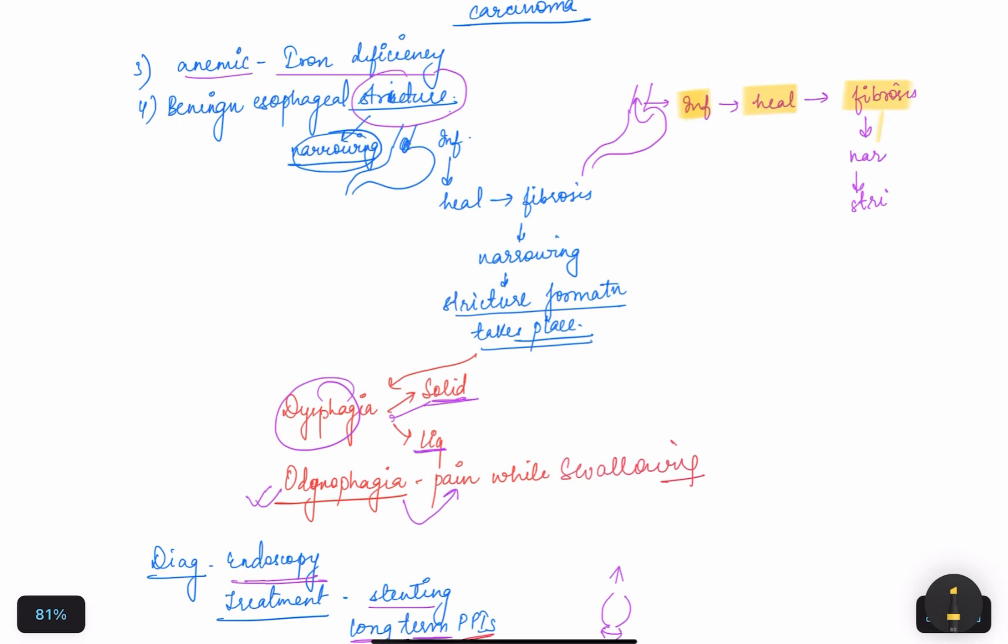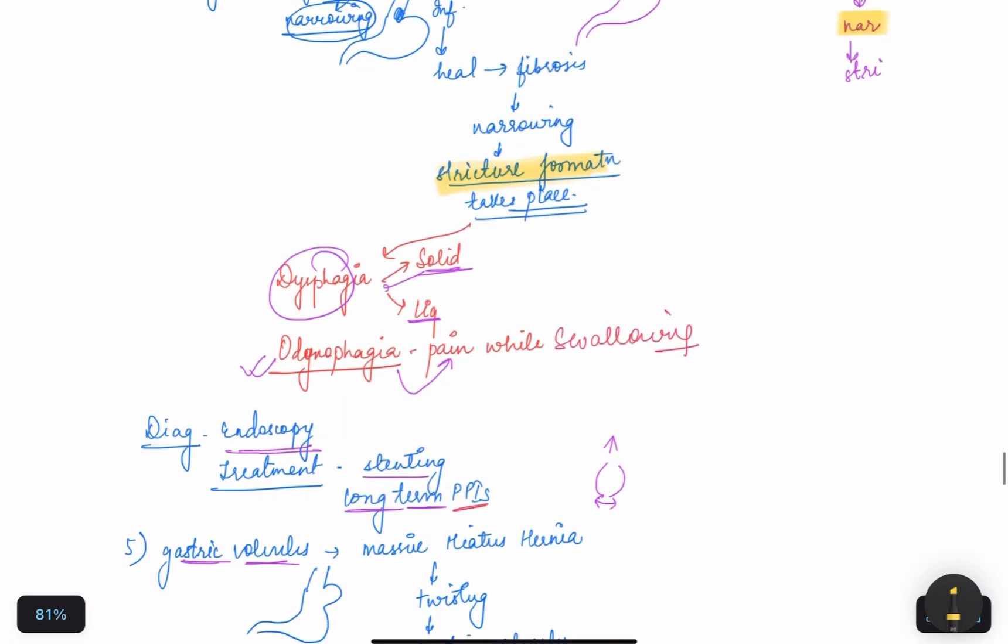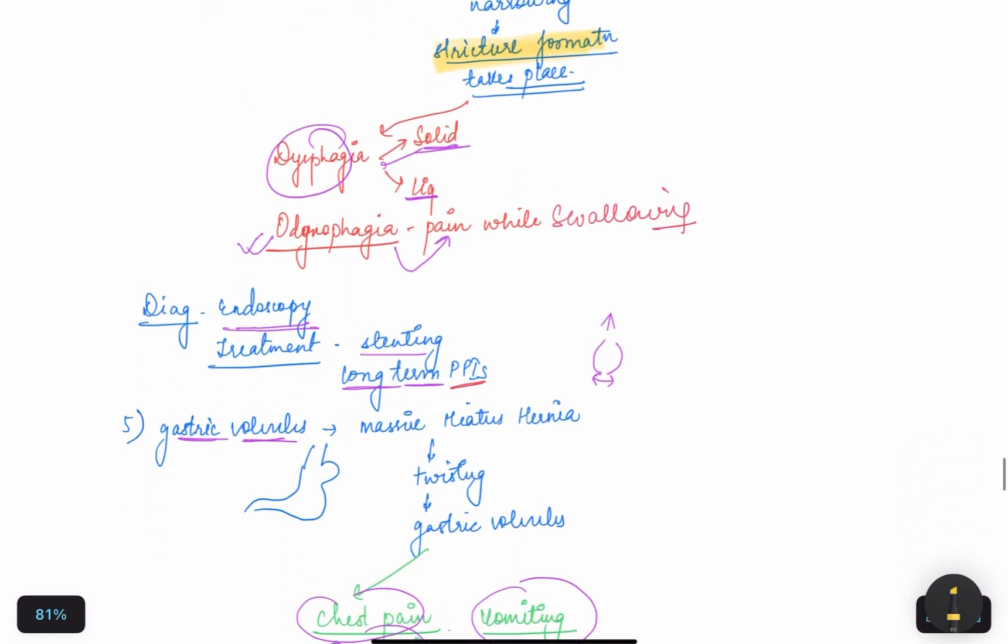Later on, fibrosis occurs and it will lead to the narrowing of the esophagus and stricture formation takes place. So the symptoms of these benign strictures are dysphagia of both solid and liquid, and odynophagia, which is pain while swallowing.